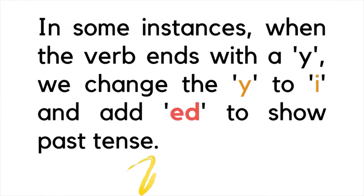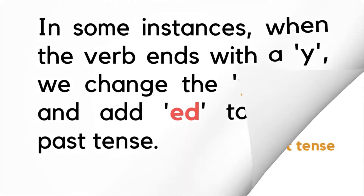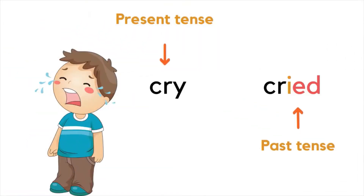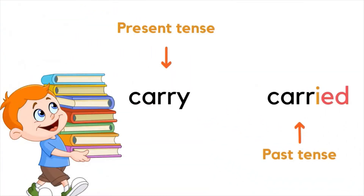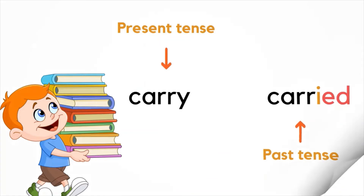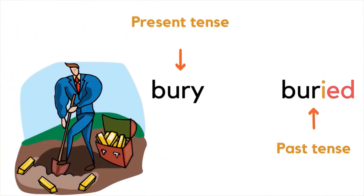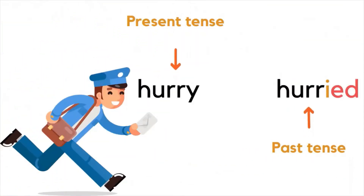In some instances, when the verb ends with a Y, we change the Y to I and add ED to show past tense. For example: cry / cried, carry / carried, bury / buried, and hurry / hurried.